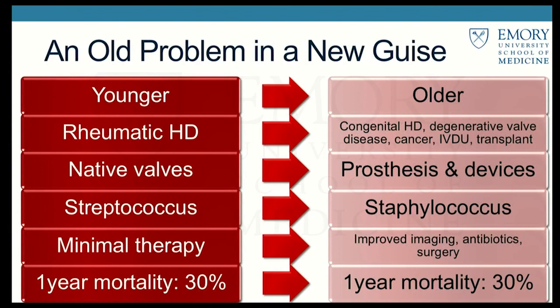The face of endocarditis has changed a lot in recent decades. In the 1980s we primarily saw patients in their mid-40s. Since the 2000s, many more patients older than 70 present with endocarditis. Rheumatic heart disease was the primary feature before; now we see endocarditis in congenital heart disease, degenerative valve disease, immunocompromised states like cancer and transplant, IV drug use, and with the advent of prosthetic valves and devices.